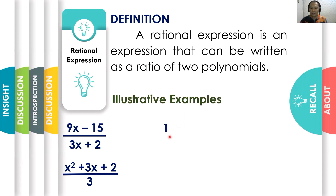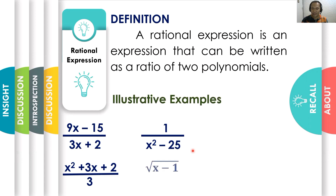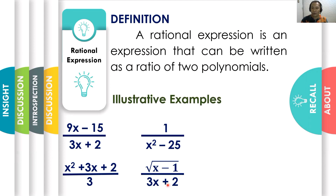What about if we have 1 all over x squared minus 25? 1 is a polynomial, and x squared minus 25 is also a polynomial. Therefore, 1 all over x squared minus 25 is a rational expression. Now, the square root of x minus 1 is not a polynomial. Although 3x plus 2 in the denominator is a polynomial, the given expression is not a rational expression.